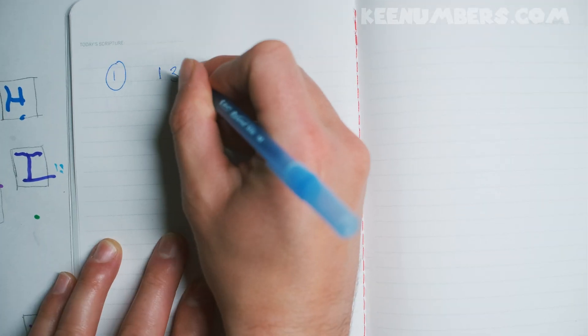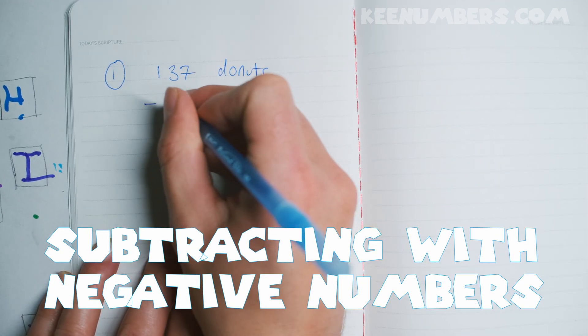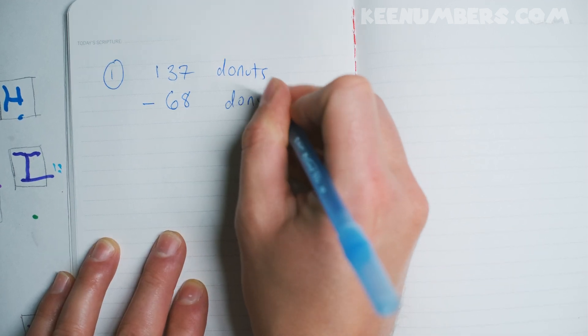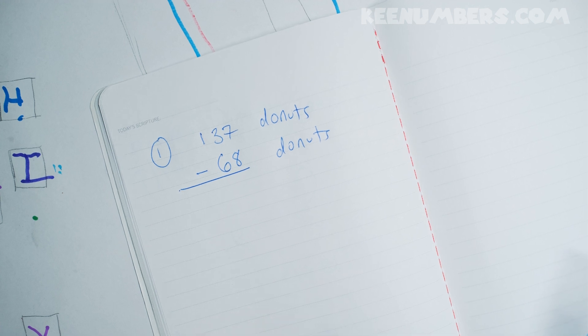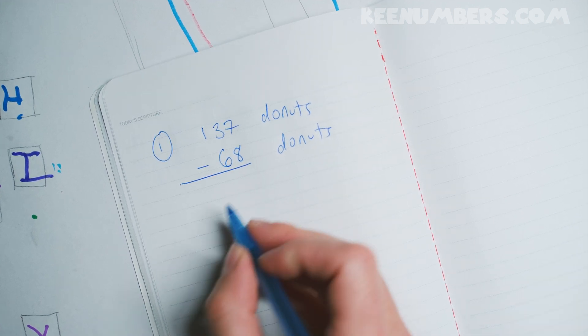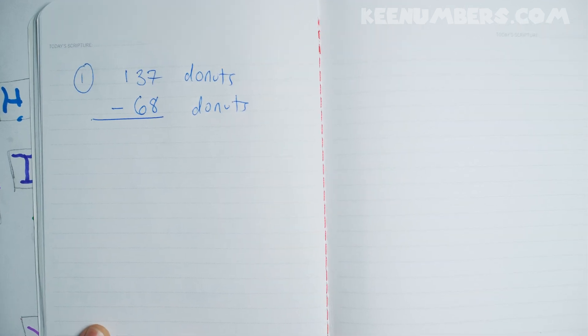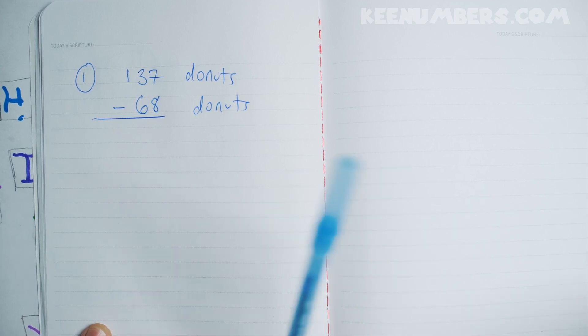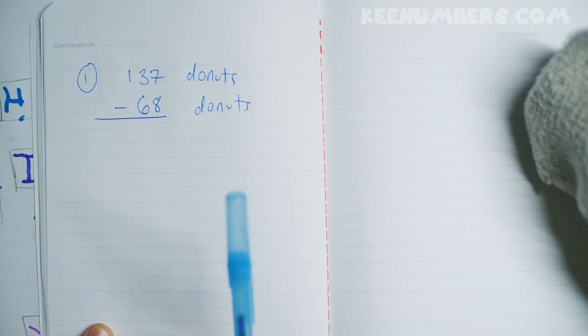Like 137 donuts minus 68 donuts. What? 37 minus 68? Alright, do you want me to write or do you want to write? I think Pirate Sam wants to subtract. Pirate Sam, are you gonna help us? Yeah. What is 100 minus 0?